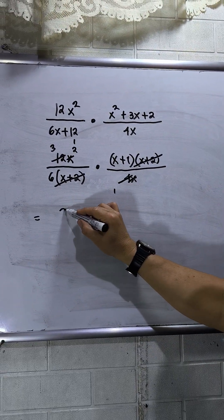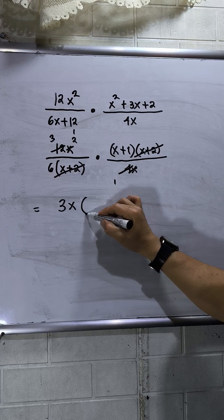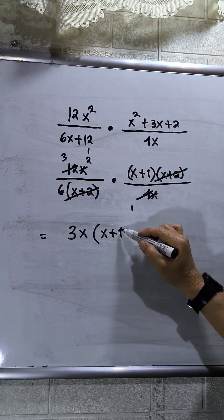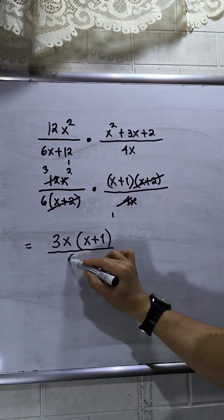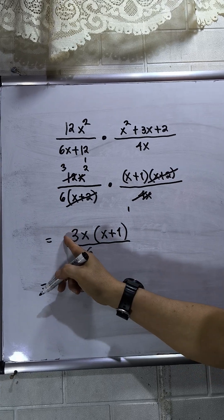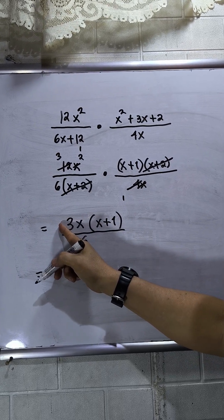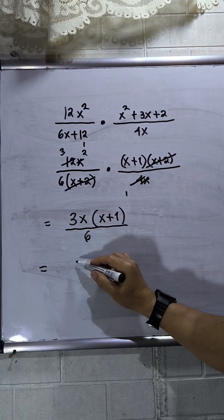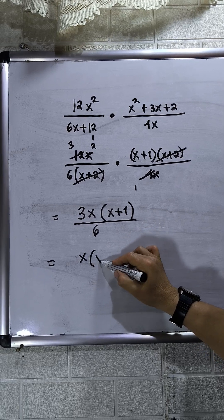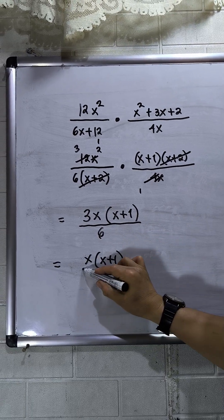So I have now 3x times x plus 1 over 6. Then divide the numerator: 3 divided by 3, and 6 divided by 3. So I have now x times x plus 1 over 2.